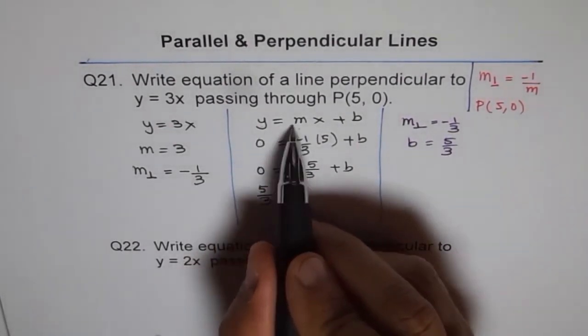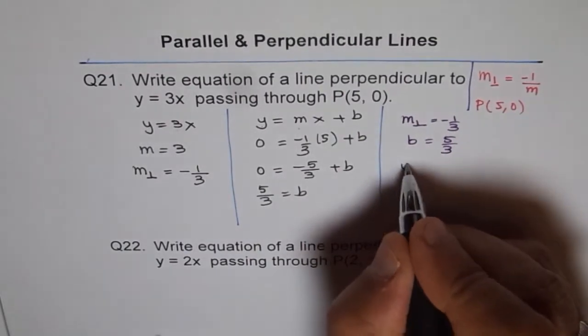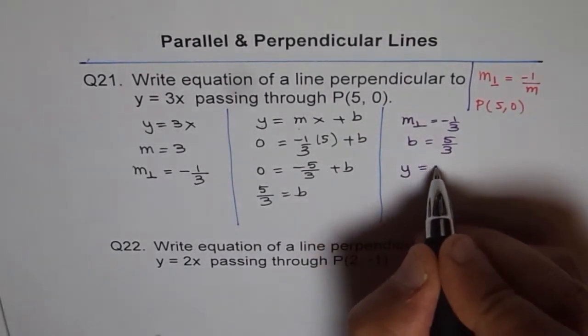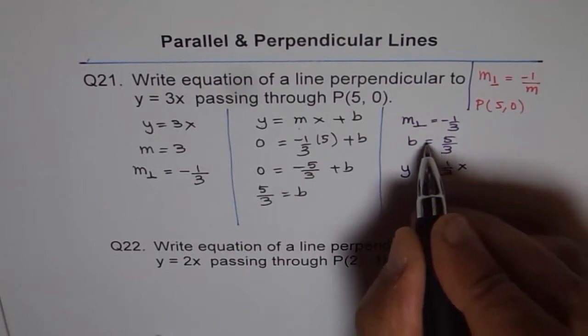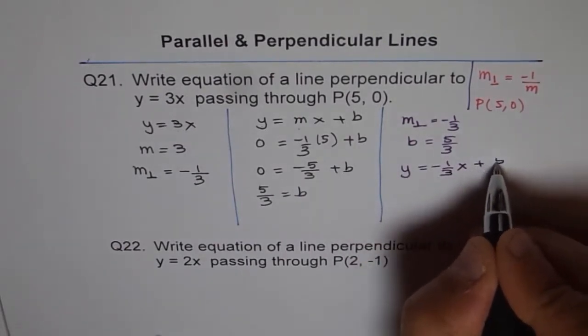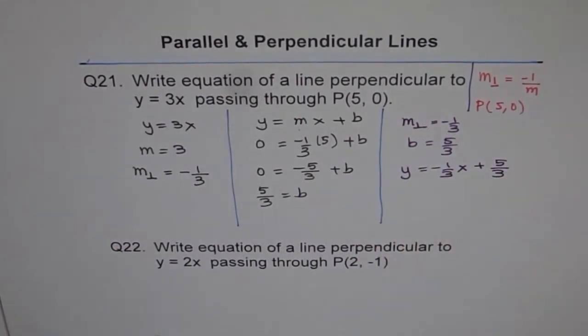And therefore, equation in the terms of y equals mx plus b can be written as y equals minus 1 over 3x plus b, which is plus 5 over 3. So that is your answer.